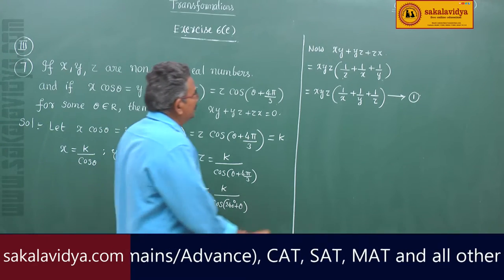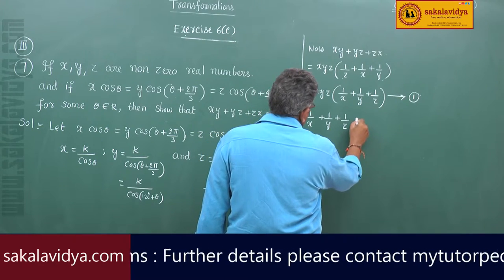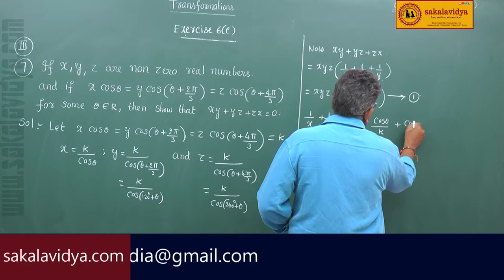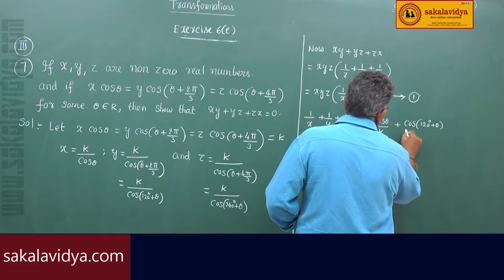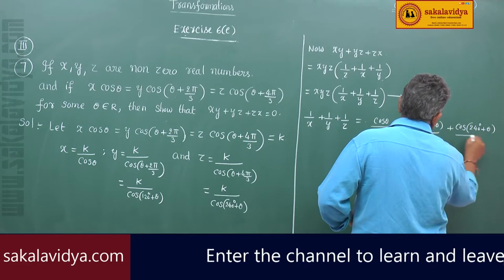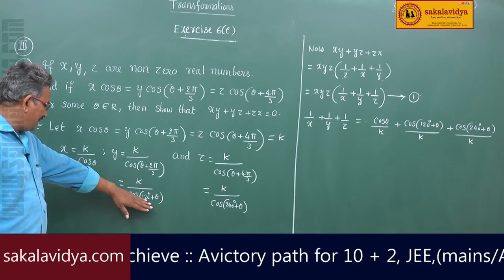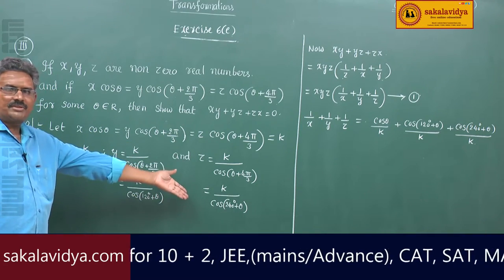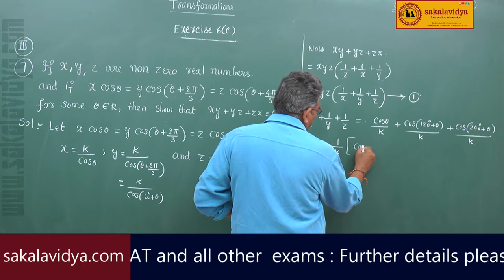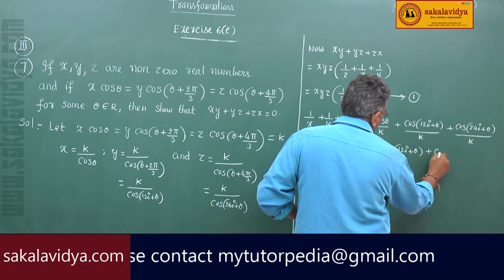So now let us find the value of 1/x + 1/y + 1/z. This is equal to cos θ/k + cos(120° + θ)/k + cos(240° + θ)/k. Since x = k/cos θ, 1/x = cos θ/k; similarly 1/y = cos(120° + θ)/k and 1/z = cos(240° + θ)/k. So 1/k is common, giving us (1/k)·[cos θ + cos(120° + θ) + cos(240° + θ)].